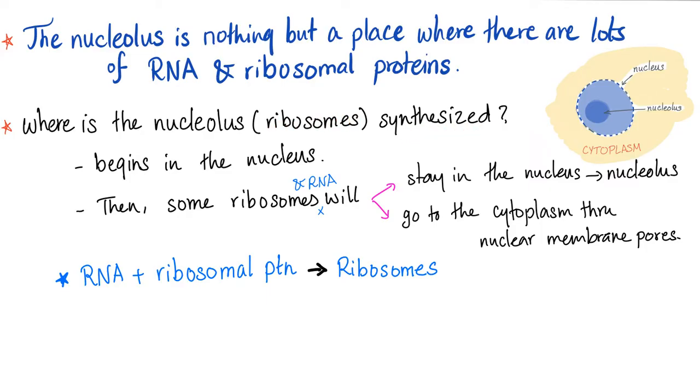They begin in the nucleus. Then some ribosomes will stay in the nucleus forming the nucleolus. Others will go to the cytoplasm to the outside through the nuclear pores, and they will form the ribosomes. RNA plus ribosomal proteins forming ribosomes.